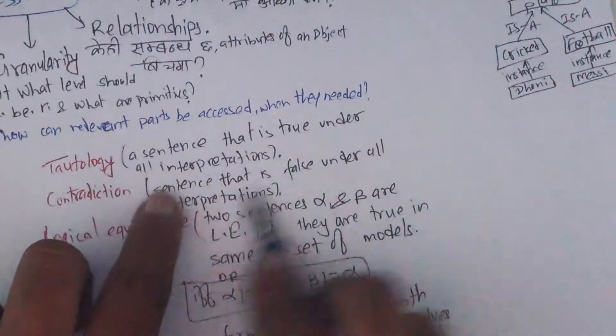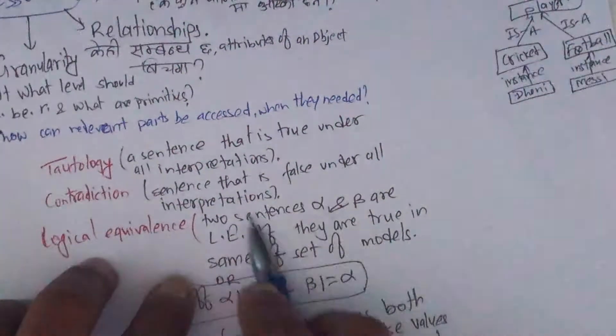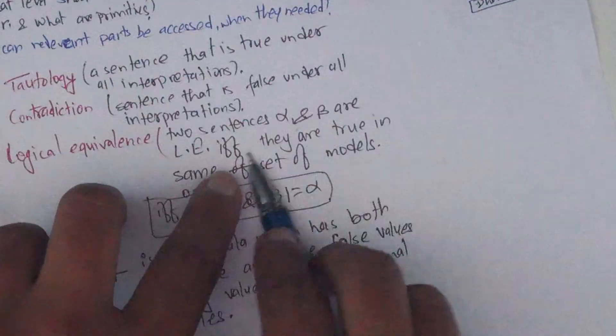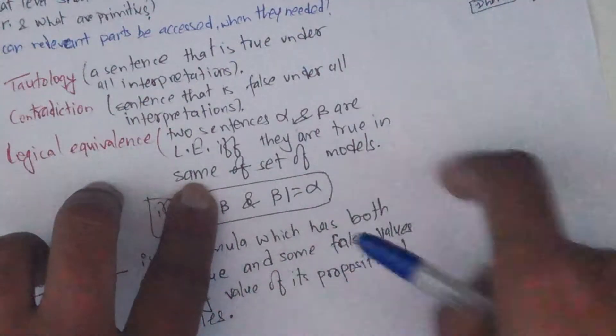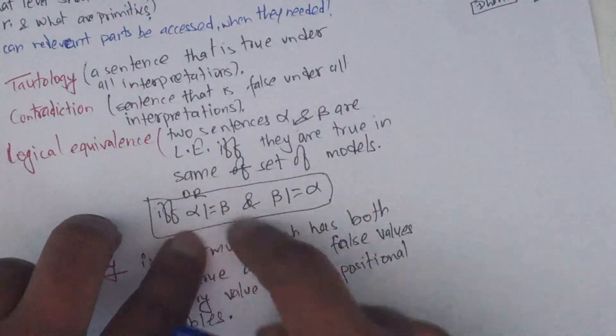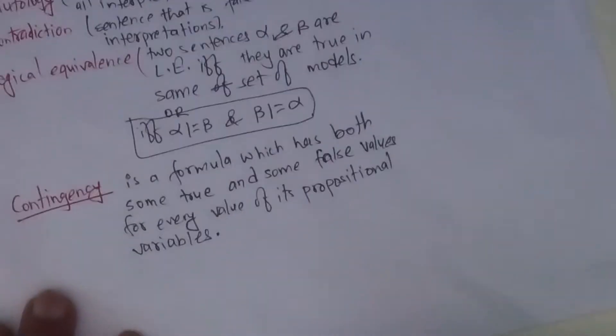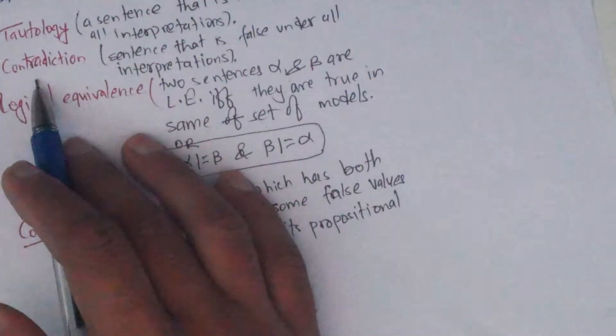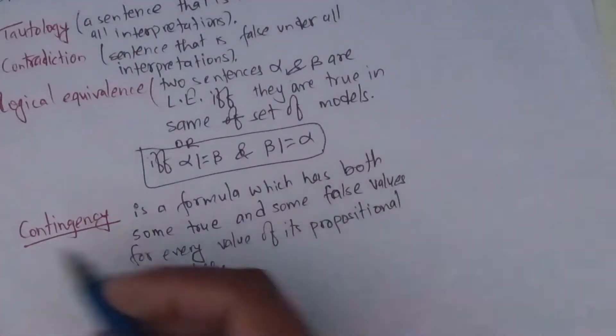In the relationship, the sentence is true in all interpretation. Logical equivalence - two sentences alpha and beta are logically equivalent if and only if they are true in the same set of models. Alpha entails beta and beta entails alpha. Contingency - true for some values, false for some values.